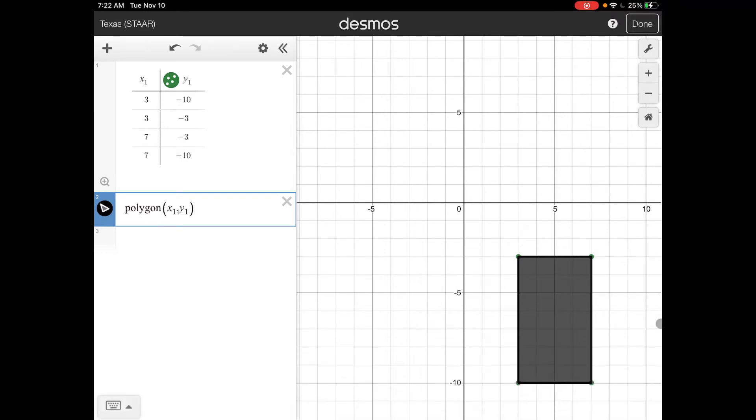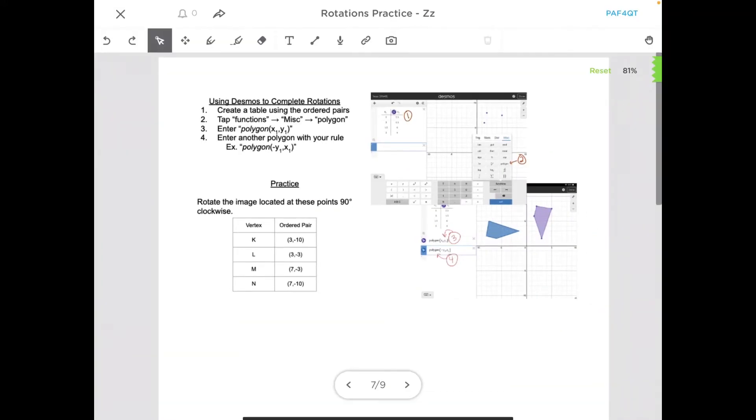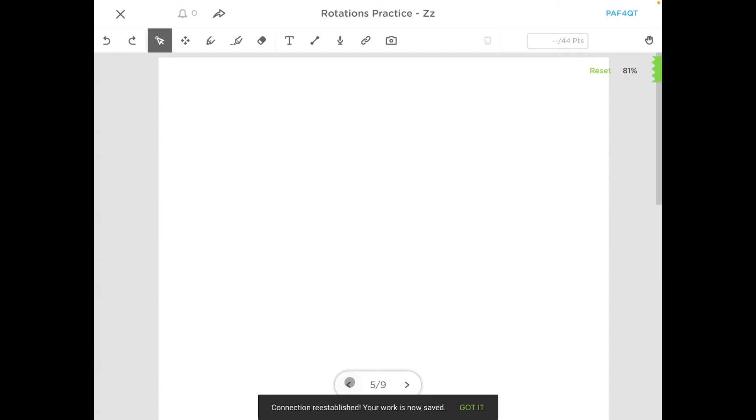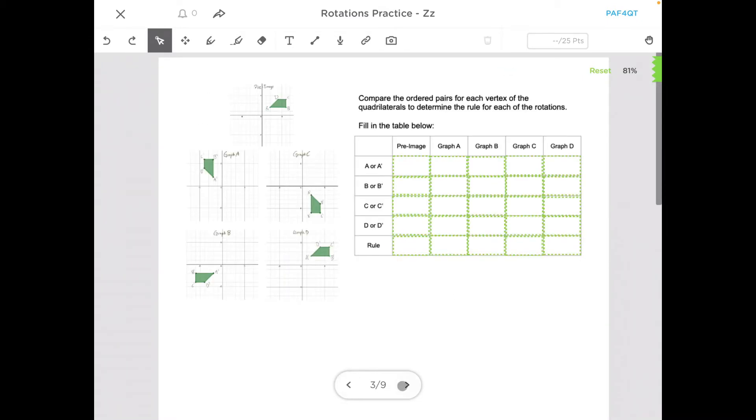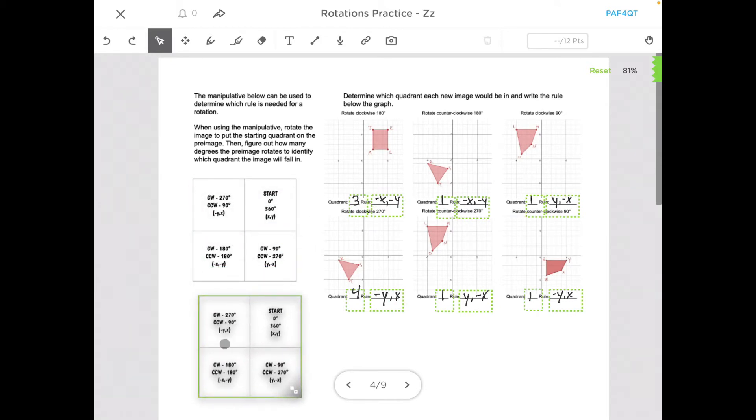So now you can see that we've got our shape, and it says to rotate the image located at the points 90 degrees clockwise. So if I go back into Classkick here, if I'm doing 90 degrees clockwise, that says my rule is (y, -x).